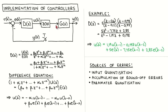The controller transfer function is defined as the z-transform of the controller output divided by the z-transform of the controller input, which can be written as a ratio of nth order polynomials. When we divide the numerator and denominator by z to the power n, we arrive at an equivalent transfer function. The question we address in this video is how to convert this transfer function to a set of equations that can be implemented in a digital processor.